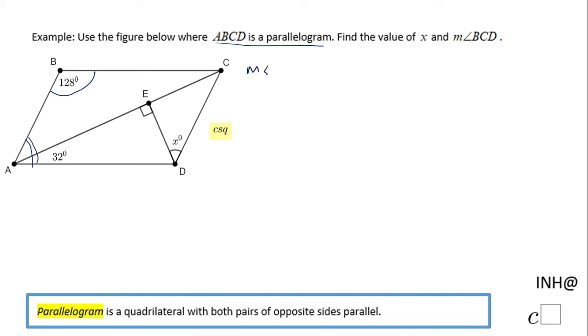The measure of angle B plus the measure of angle BAD equals 180, and angle B is 128 degrees plus the measure of angle BAD, the one we need to find out, equals 180. So we have to subtract 128 on both sides and end up with the measure of angle BAD is 52 degrees.